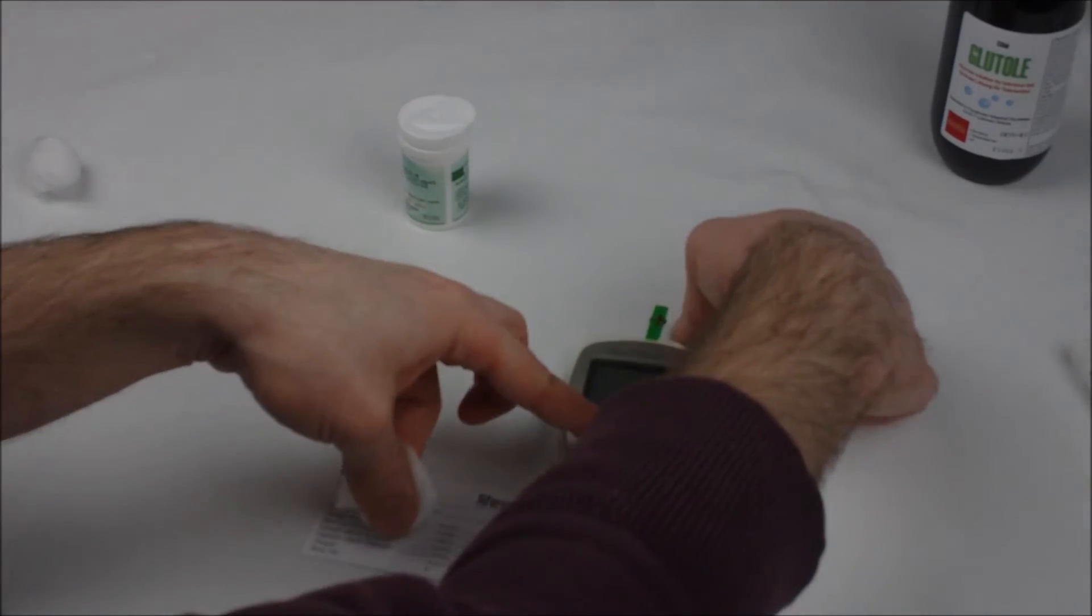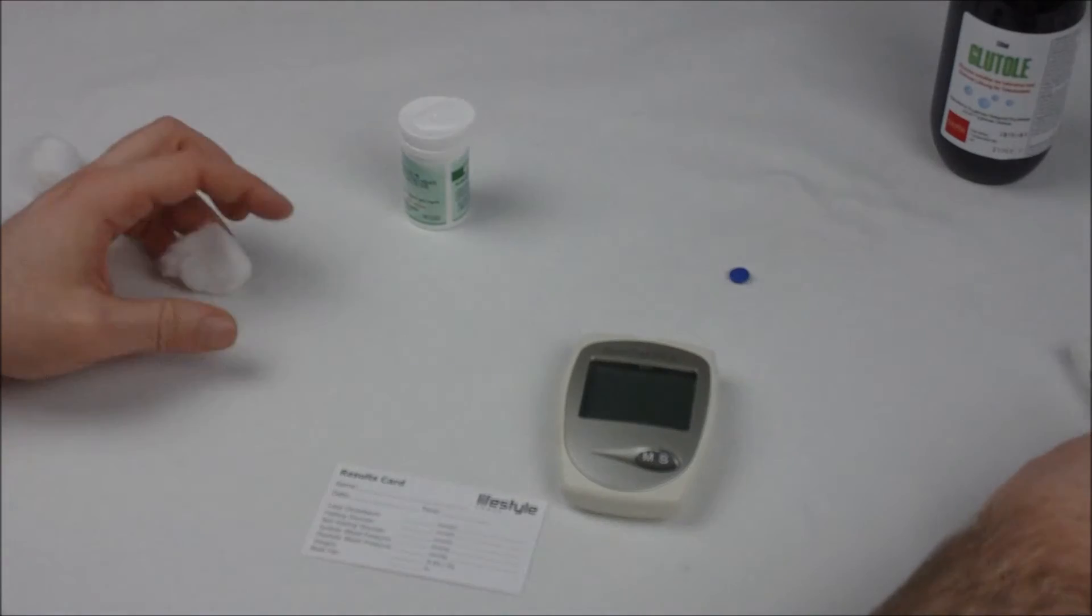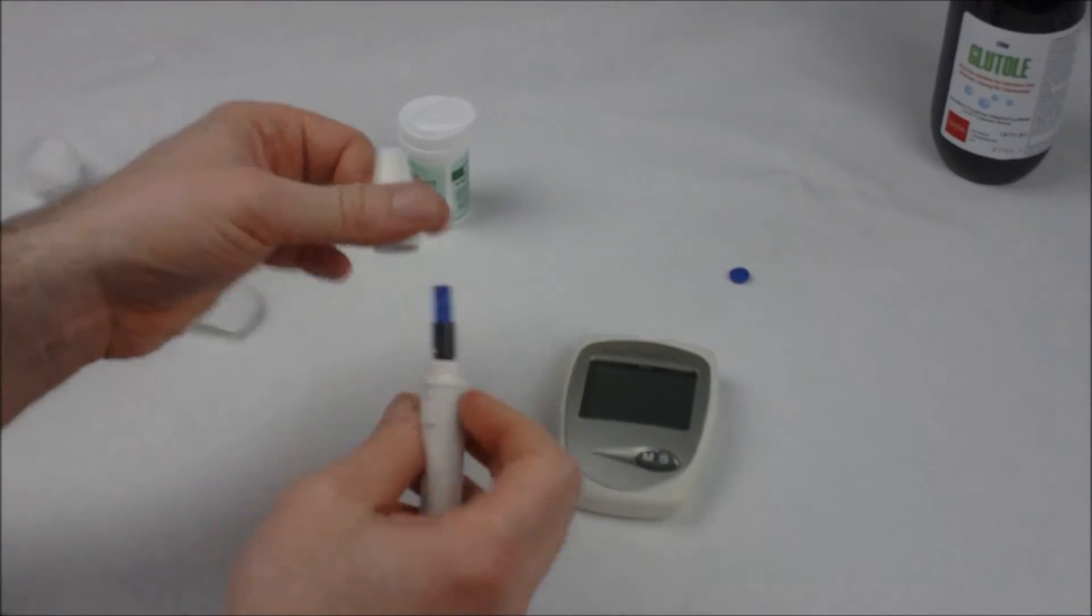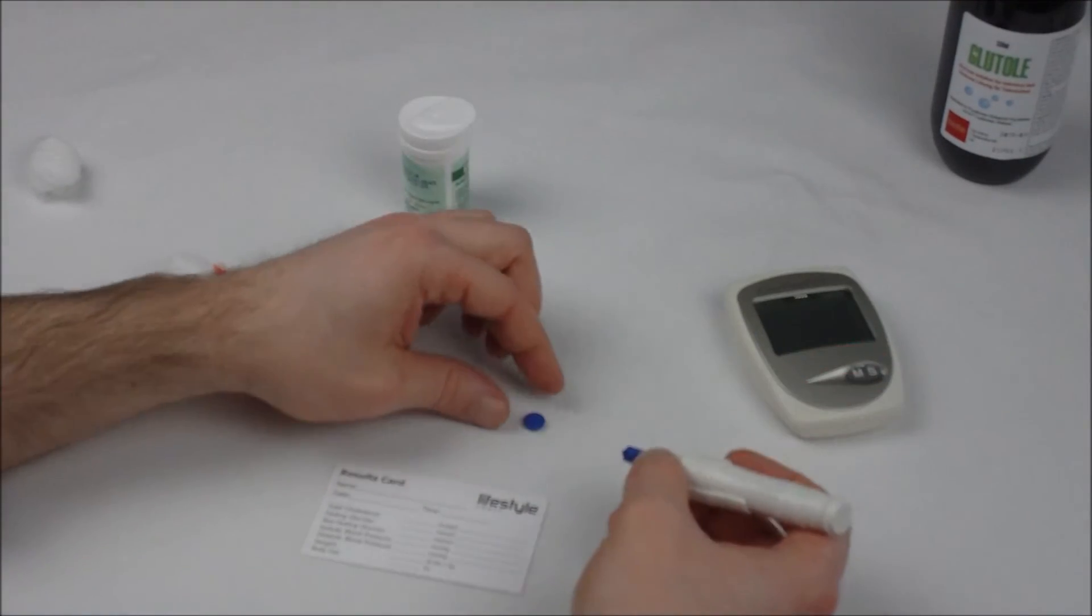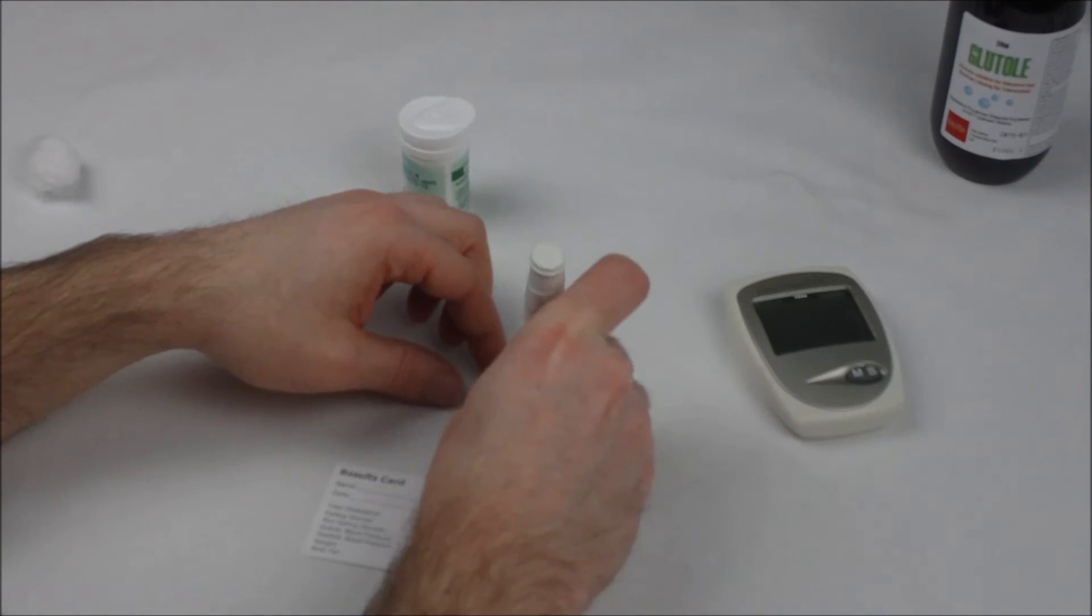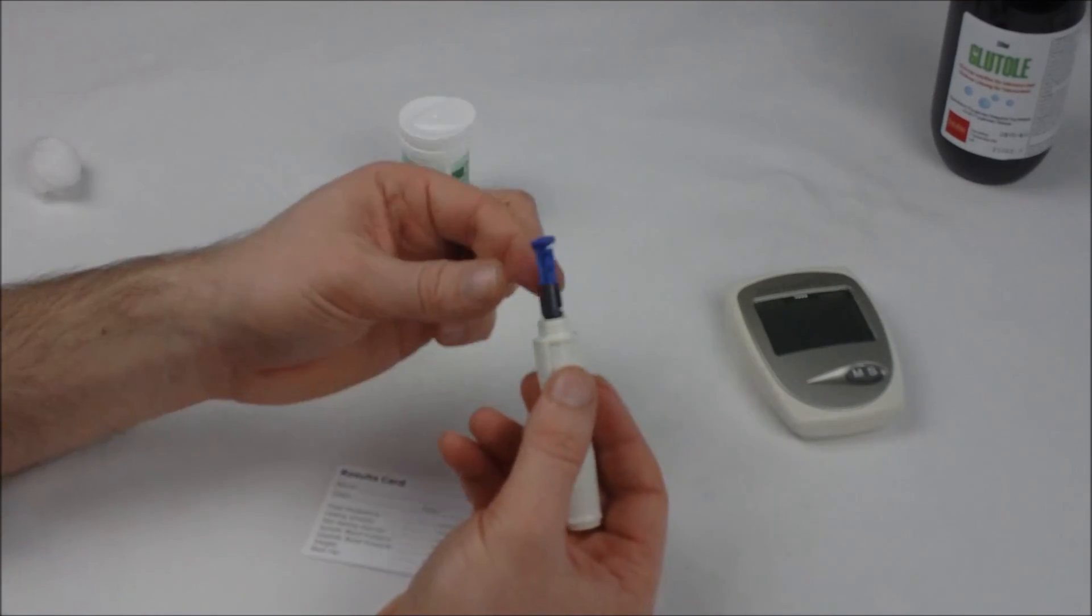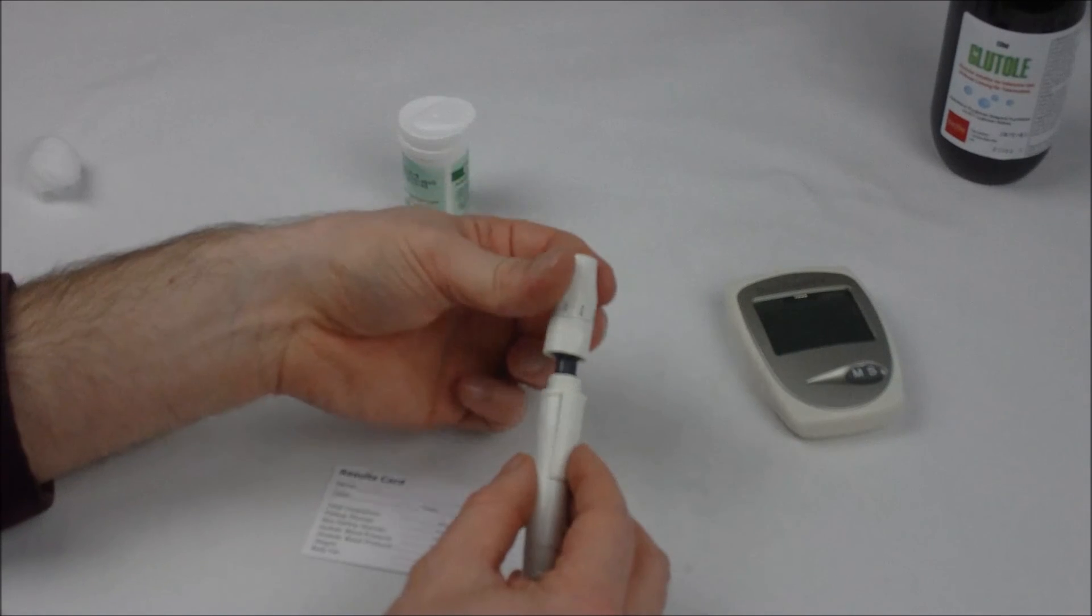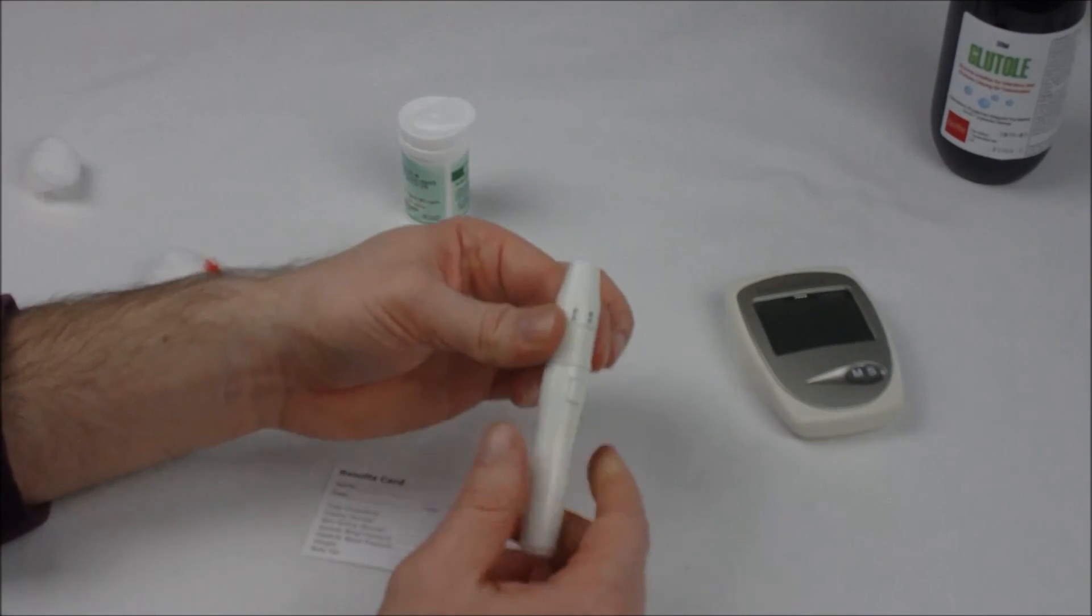Once that's done. Discard your test strip. And you may want to discard of your needle as well. Do this by pressing down on the cap. That just shields the needle. So there's no harm. Remove this and discard. And put your pen back together again.